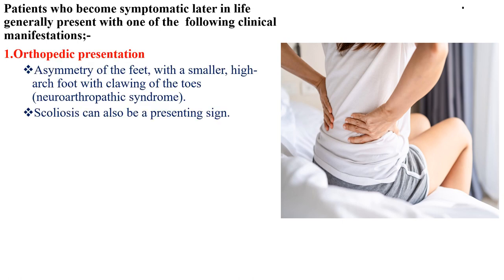Patients who become symptomatic later in life generally present with one of the following. The first is orthopedic presentation: asymmetry of the feet with a smaller, high-arched foot with clawing of the toes, called neuroarthropathic syndrome, and scoliosis can also be presenting signs.